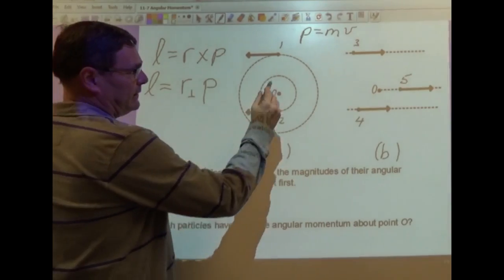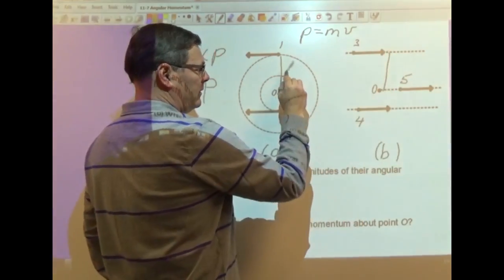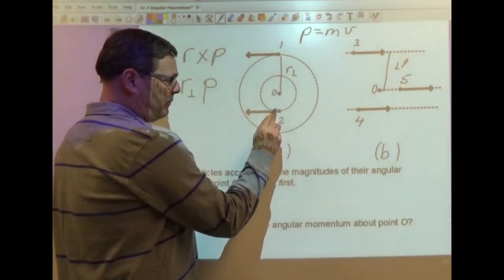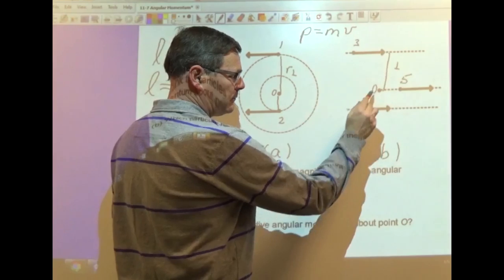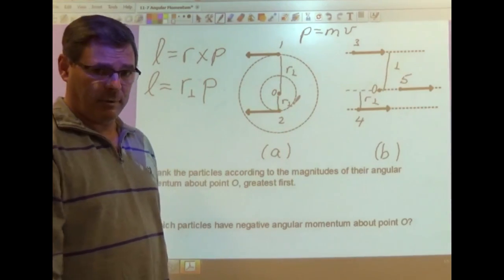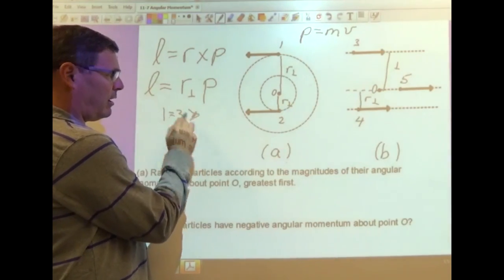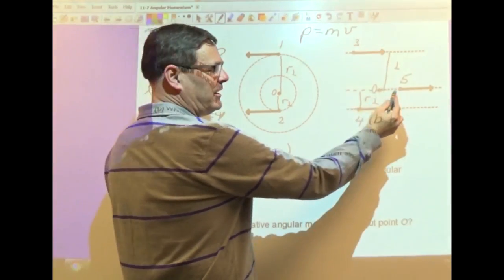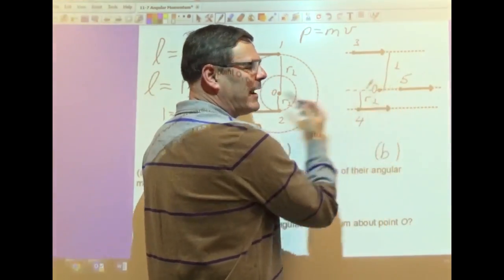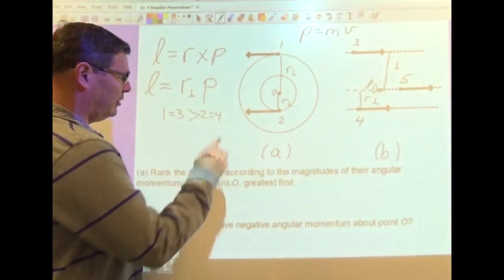So I see that 1 and 3 have the same R perpendicular and they are the greatest. The R perpendicular for 2 and 4 are also the same, but they're less. So that means 1 and 3 are the same, which is more than 2 and 4, which are the same. And then you see that R perpendicular for 5, the extension of P for 5 goes right through the point O, about which we're describing our angular momentum. So that has an R perpendicular of 0, so that would be last.